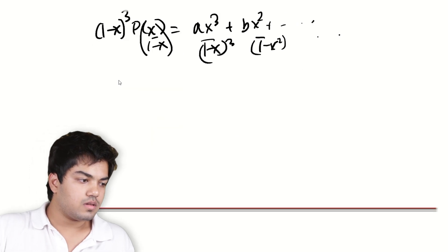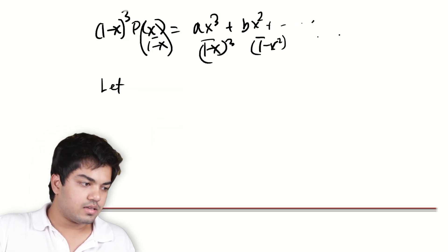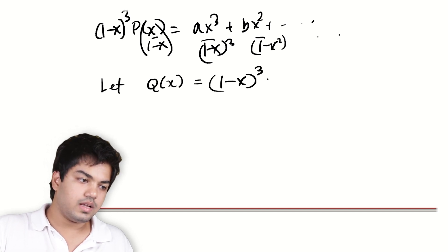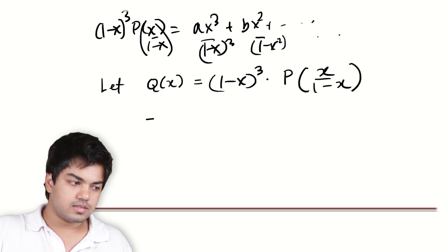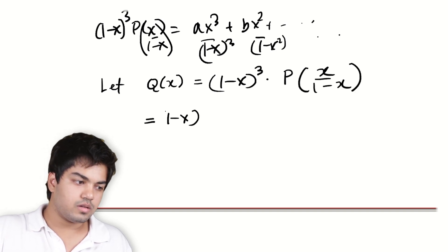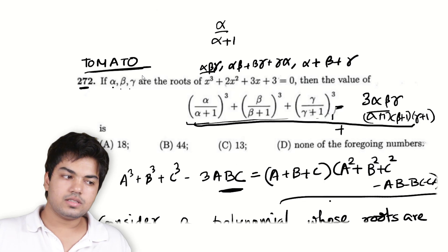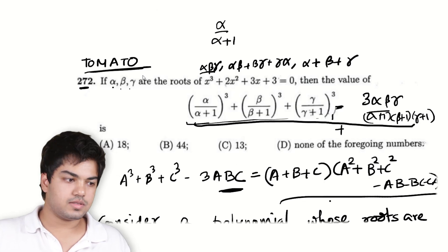So, let Q(x) be the polynomial. And now I can say it's a polynomial. Right? (1-x)³ times P(x/(1-x)). Right? Let's see what this is. This is (1-x)³ into, let's look at what the polynomial was. It was x³ + 2x² + 3x + 3.